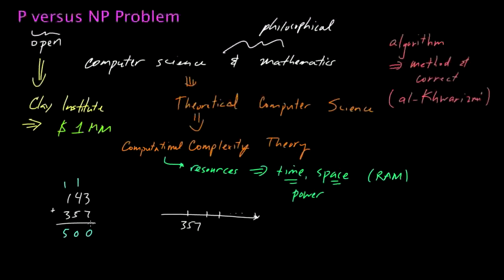In this particular case, you would carry whenever the number is 10 or greater for a particular column. And if you proceeded in this way from right to left, or from left to right, depending on how you're looking at the screen, you would ultimately arrive at an answer of 500. And, you know, it is worth pointing out that the fact that there is such an efficient mechanism for solving this problem is something we take for granted today.